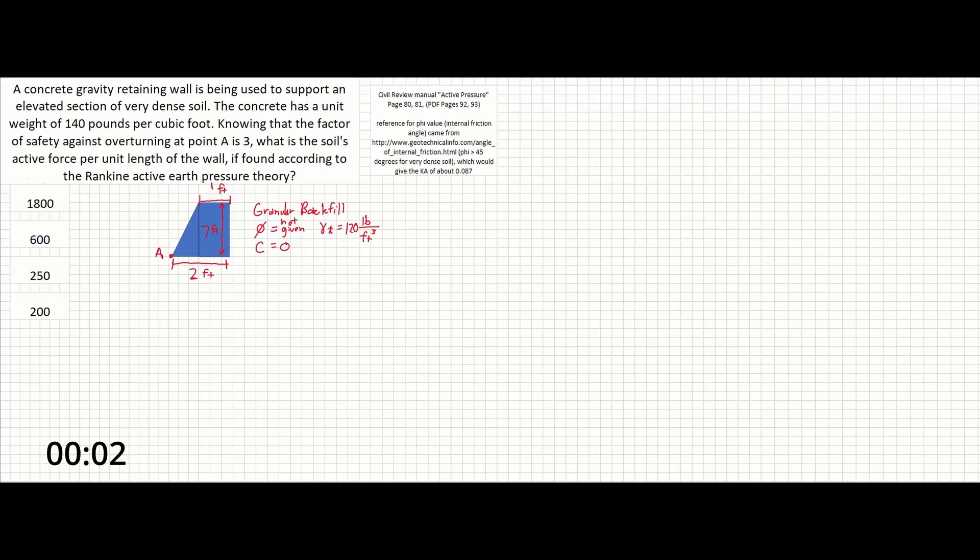Okay guys, in this problem, a concrete gravity retaining wall is being used to support an elevated section of very dense soil. The concrete has a unit weight of 140 pounds per cubic foot. Knowing that the factor of safety against overturning at point A is 3, what is the soil's active force per unit length of the wall if found according to the Rankine Active Earth Pressure Theory?